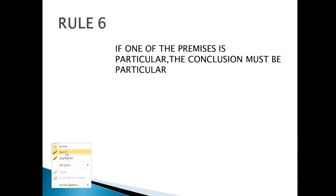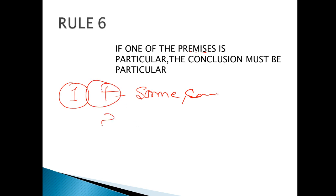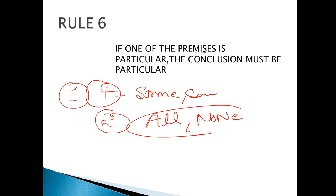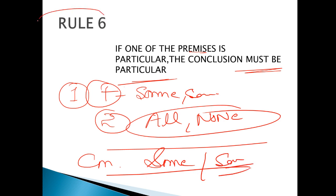Rule number 6 कहता है: अगर एक premise particular है — मतलब एक statement में Some या Some not आ गया है — तो conclusion भी particular होगा। That means जो third conclusion आएगा वो भी Some या Some not होगा। यह rule number 6 याद करें।